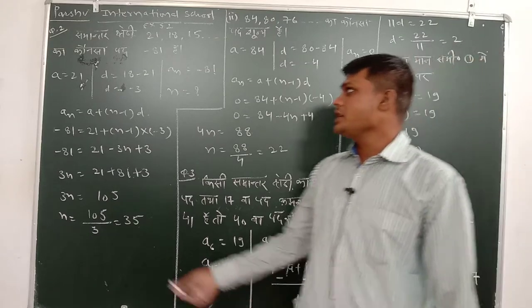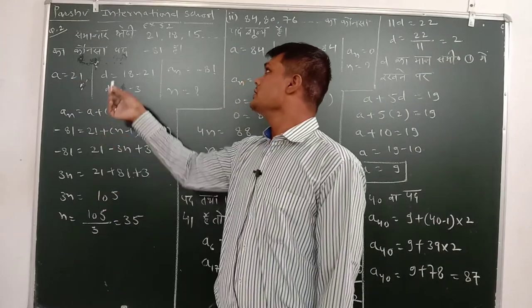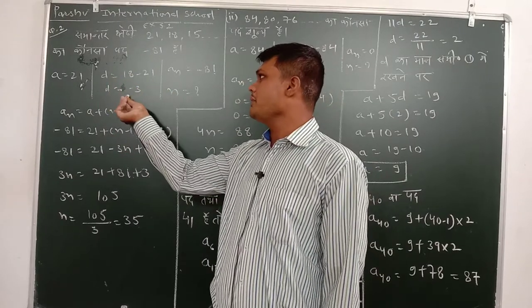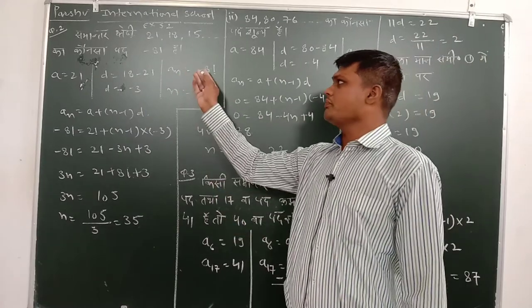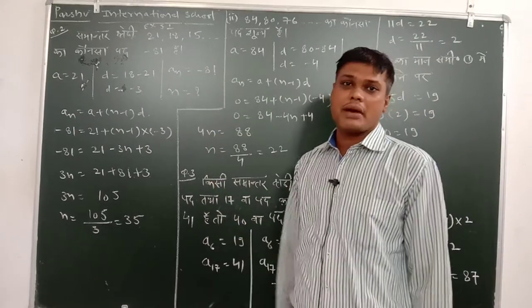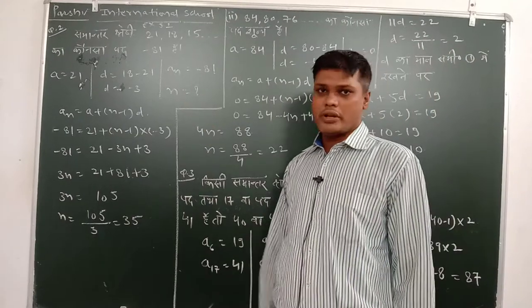Hume a barabar kya diya hua hai? Yaha pare 21. D kaman kitna hoga ye? 18 minus 21, so d barabar minus ka 3. And an jo pad last pad diya hua hain, kya diya hua hai? Minus 81. And padok ke sankhya ke liye small n.